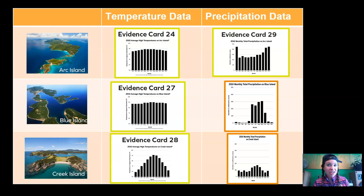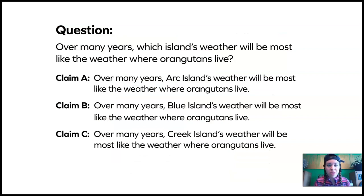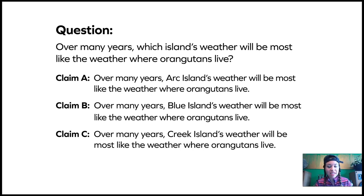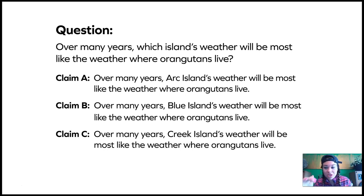Do you have any initial ideas about which island might be the best? If you're still a little confused, that's okay. The question we're trying to answer is: over many years, which island's weather will be most like the weather where orangutans live — hot and rainy all year? Claim A says Arc Island's weather will be most like it. Claim B says Blue Island's weather will be most like it. Claim C says Creek Island's weather will be most like it. Claim A is for Arc Island, Claim B for Blue Island, Claim C for Creek Island — that's how we can remember.